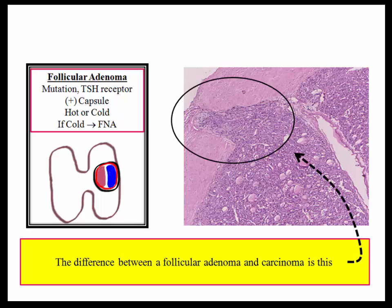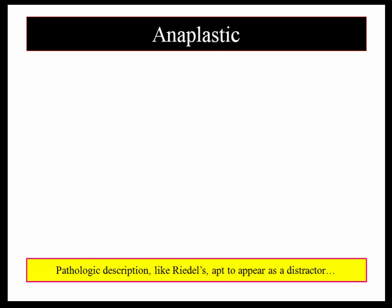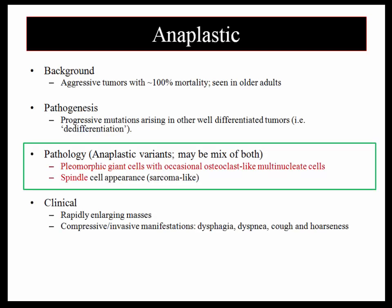Here is anaplastic carcinoma. Be familiar with the pathologic description. This is more apt to be a pathology distractor rather than a specific question target, like Riedel's thyroiditis. This is a nasty player — 100% mortality. It is seen in older adults. Pathogenesis reflects de-differentiation, which simply means that it takes something bad and makes it worse.